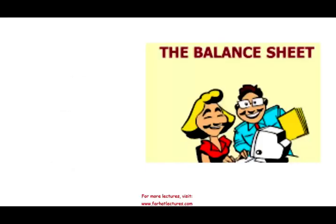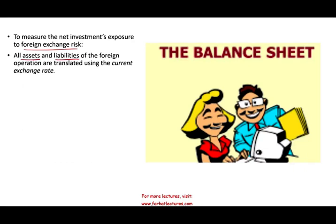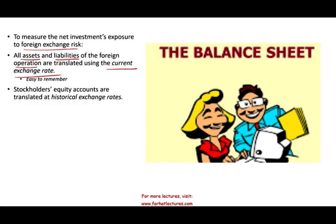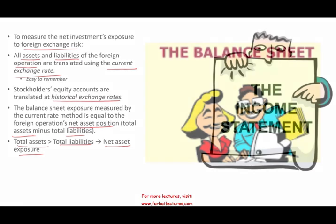How do you translate your balance sheet numbers? To measure the net investment — which is assets minus liabilities — all assets and liabilities of the foreign operation are translated using the current exchange rate. When it comes to stockholders' equity, whether you are using the current method or the temporal method, you always use the historical exchange rate, with a slight complication for retained earnings which we'll cover in the next session. The balance sheet exposure measured by the current rate method equals the foreign operation's net asset position — assets minus liabilities. If we have more assets than liabilities, we have a net asset or equity position.